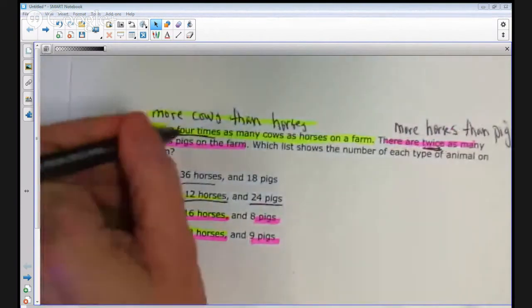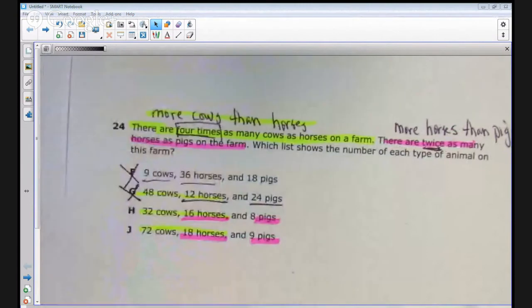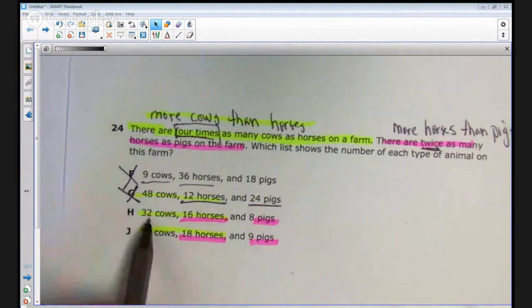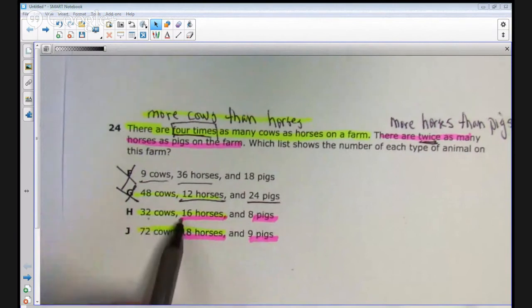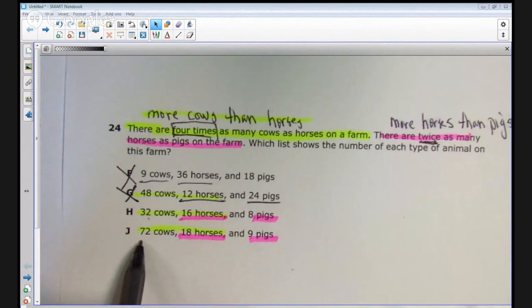We're going to have to take a look at the four times. If there are four times as many cows as horses, that means the number of cows should be four times the number of horses. Well, in answer choice H, 32 is only two times the number of horses, which is 16. In answer choice J, the number of cows is 72. The number of horses is 18. That would be four times as many.